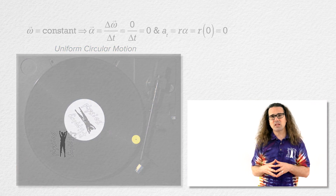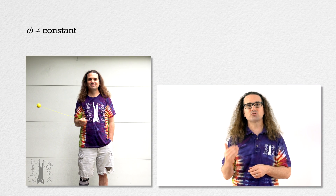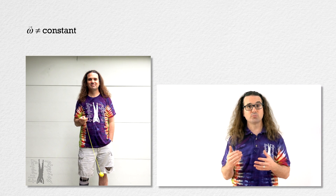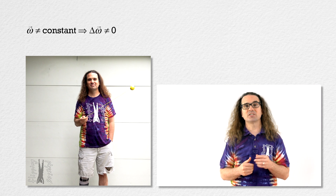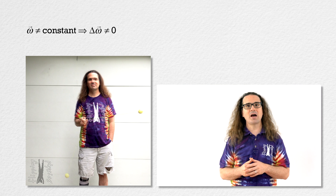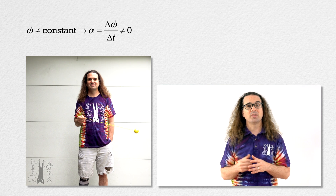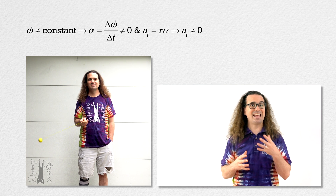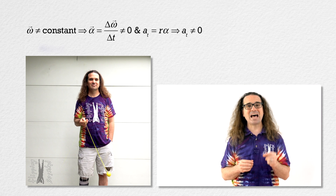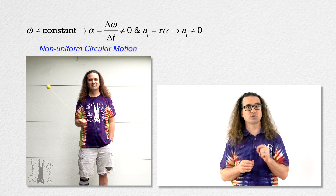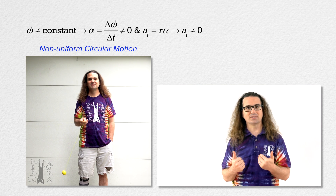When the angular velocity of an object is not constant, like the ball on the end of this string which is moving in a vertical circle, the change in angular velocity of the object does not equal zero, so the object does have angular acceleration. The object therefore also has tangential acceleration, and the motion of the object is called non-uniform circular motion because the angular velocity of the object is not constant.